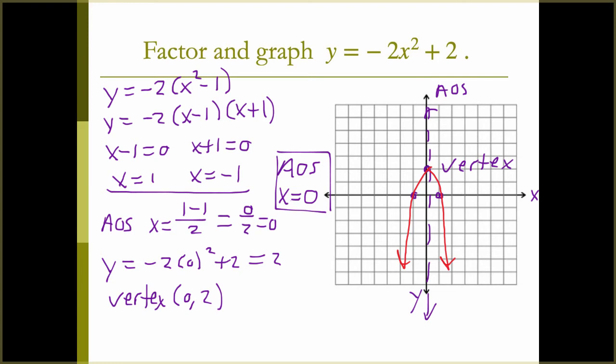Our factors tell us where our x-intercepts are. We find our AOS halfway between the two intercepts, then use the AOS x-value to find the vertex. Plot those three points and connect with a smooth curve. Make sure you're labeling everything — I need to see your two intercepts, axis of symmetry, and vertex all labeled and stated.